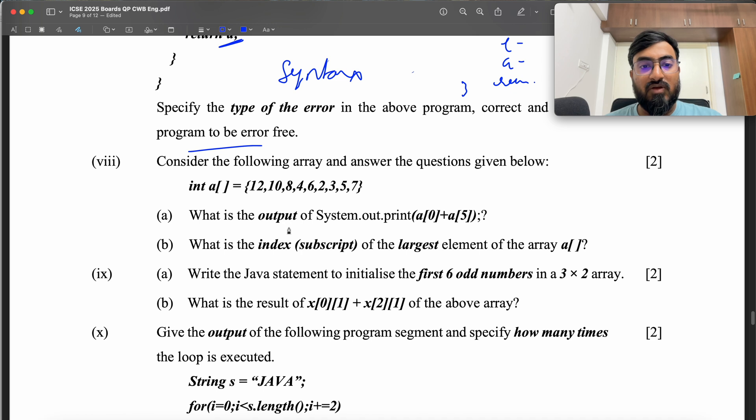Consider the following array and answer the questions given below. What is the output of A[0] plus A[5]? This is index 0, 1, 2, 3, 4, 5. So 12 plus 2. 12 plus 2, this is going to be 14. What is the index subscript of the largest element of the array A? So 0, 1, 2, 3, 4, 5, 6, 7, 8, index 0. 12 is the largest element, comes at the first index, index 0.